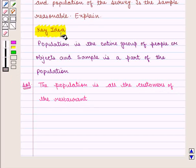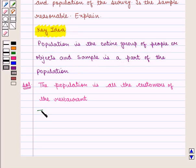From the key idea, we know that population is the entire group of people or objects and sample is a part of the population. So, we can say the sample is the five customers whom he had asked the question.